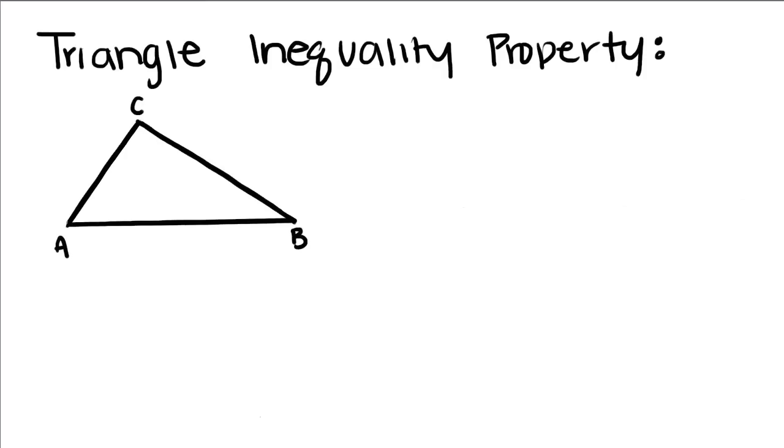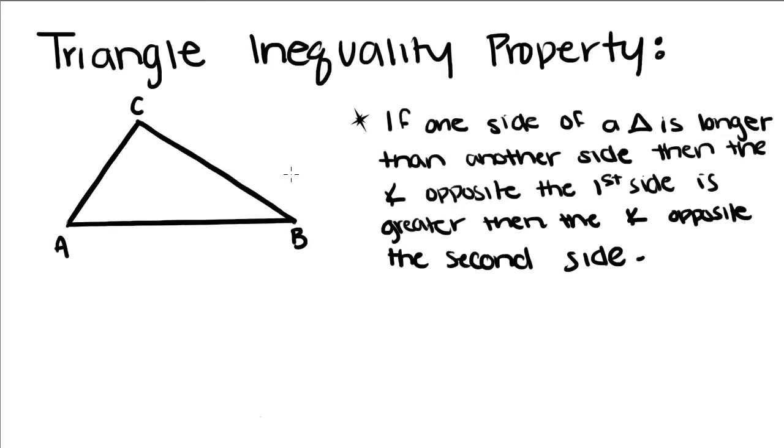So our first one says, if one side of a triangle is longer than another side of a triangle, then the angle opposite the first side is greater than the angle opposite the second side.